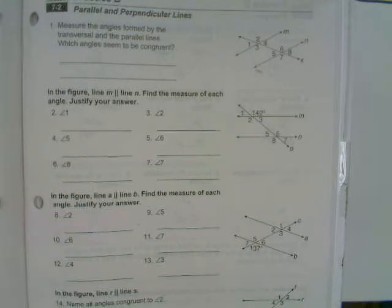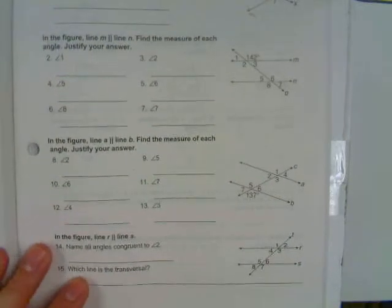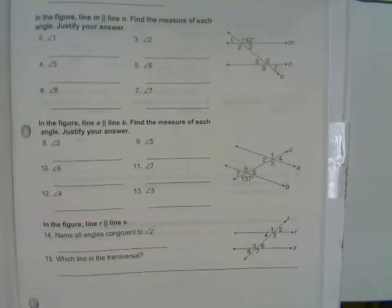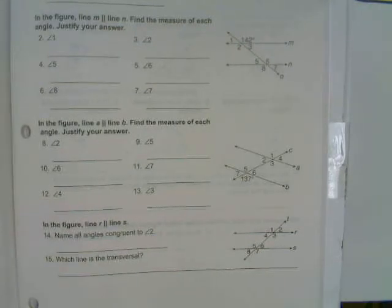Let's go down to 2 through 7. In the figure, line m is parallel to line n, and you're supposed to find the measure of each angle and justify your answer.